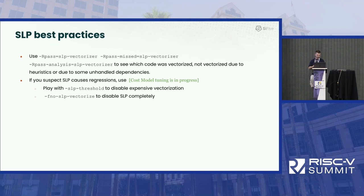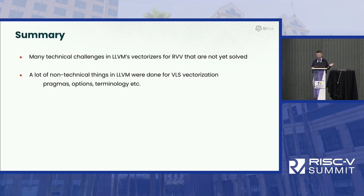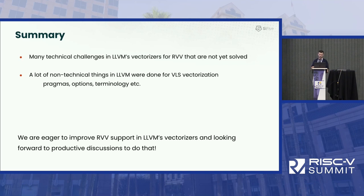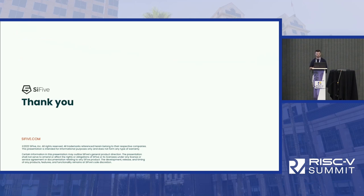In summary, RVV already provides many technical challenges for LLVM, which I actually find fascinating, and we are working on solving them. I would like to upstream these solutions. There are also non-technical challenges related to pragmas, options, and so on that I think we need to address. I'm looking forward to supporting RVV in LLVM, having productive discussions on how we can do that, and making everyone's life easier to vectorize loops using RVV. That's all. Thanks everyone.